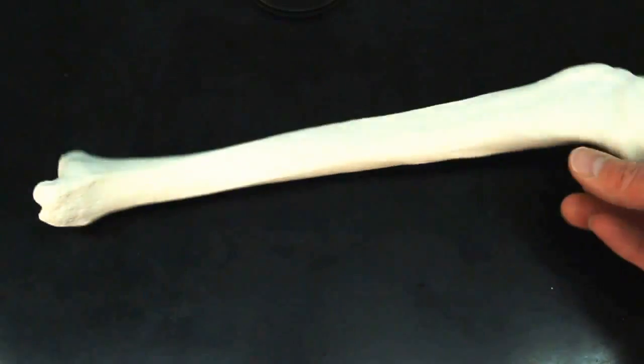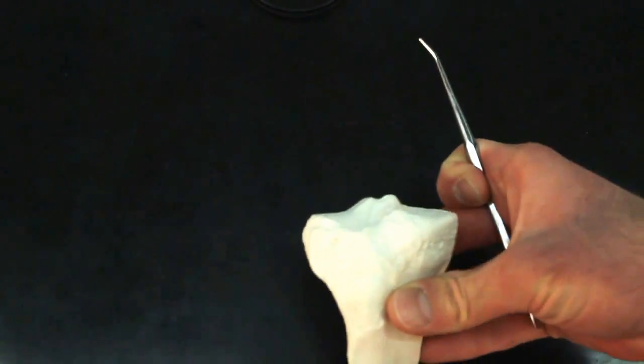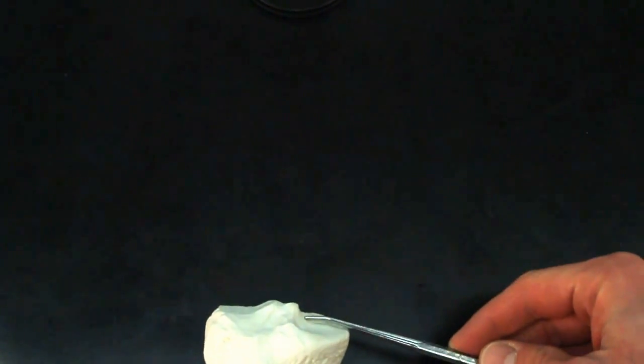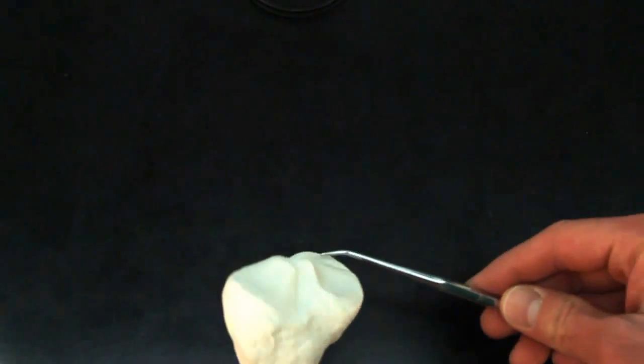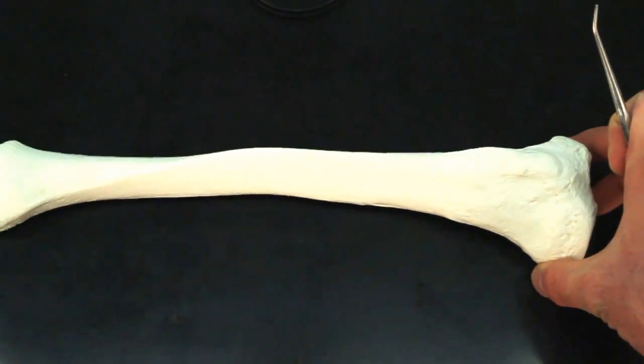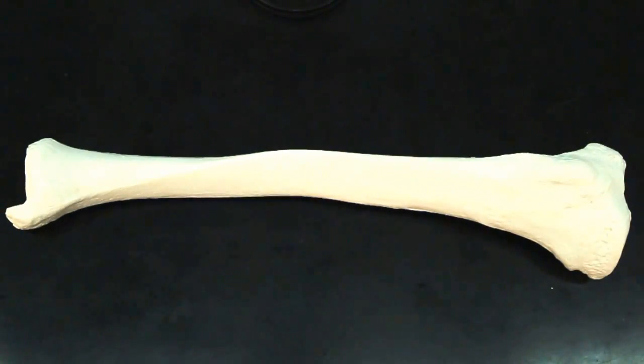And right at the very top of the bone, you're going to see these smooth surfaces. Each one of these smooth surfaces is a condyle. So if we look at the smooth surface on this side, this is the medial condyle.